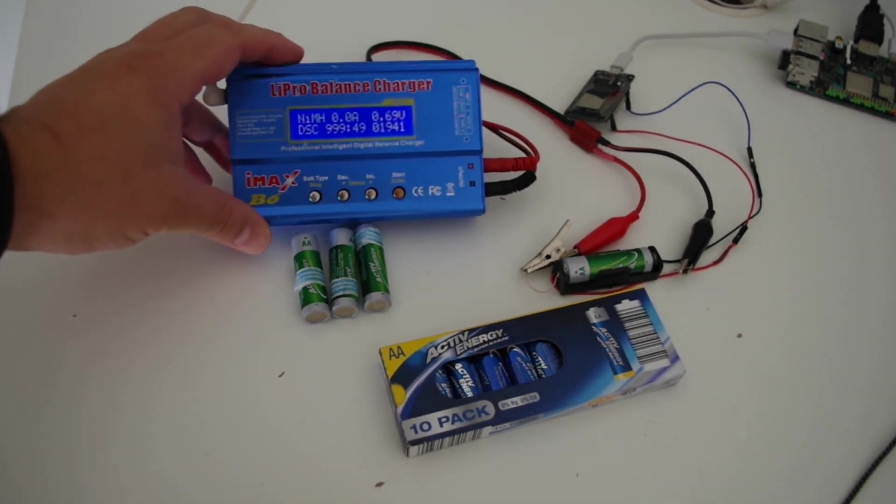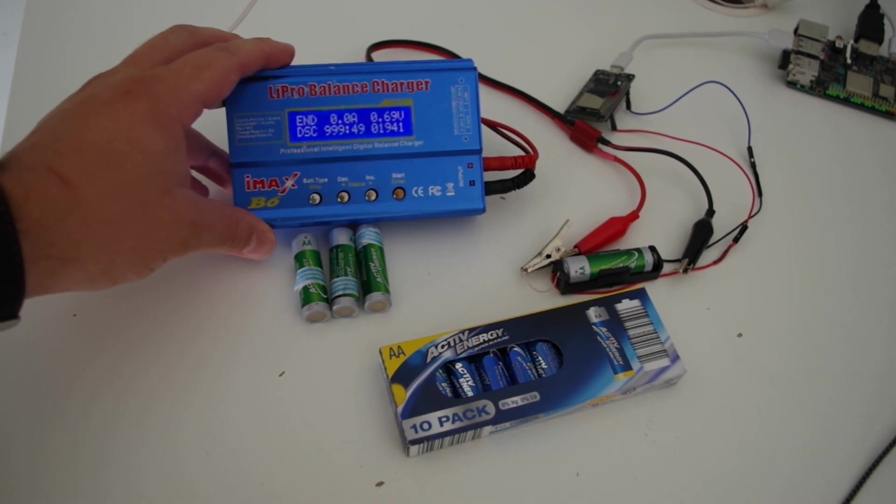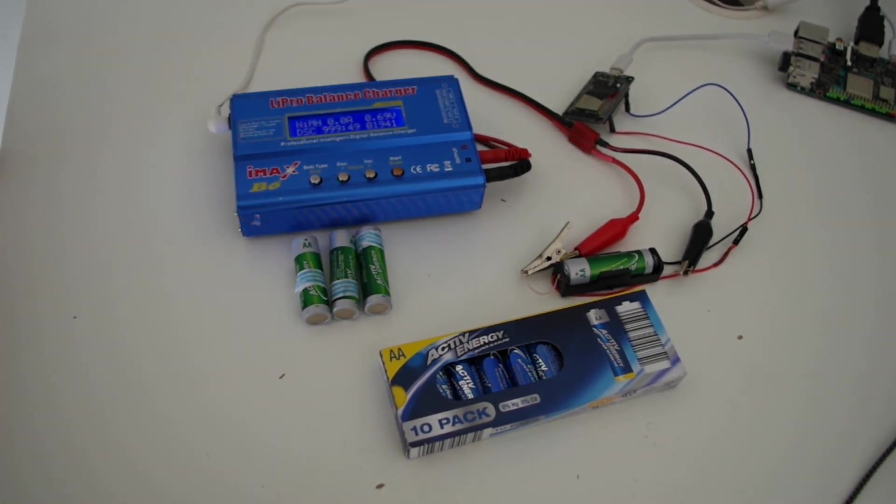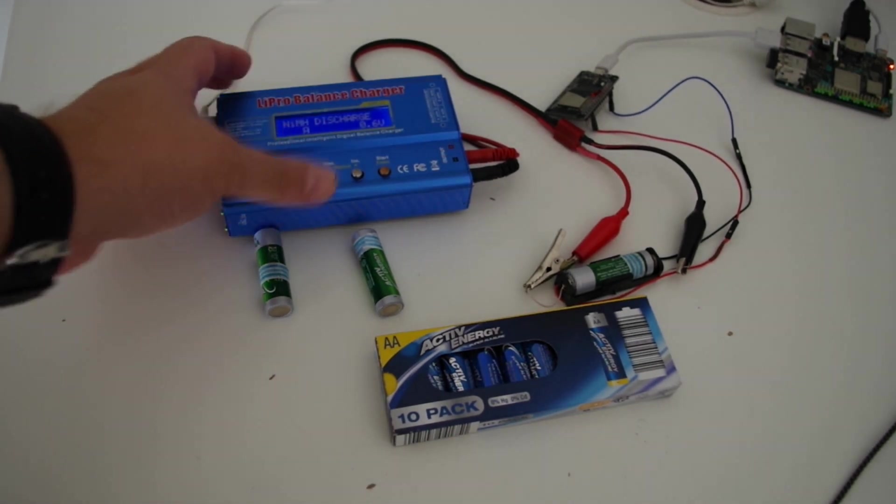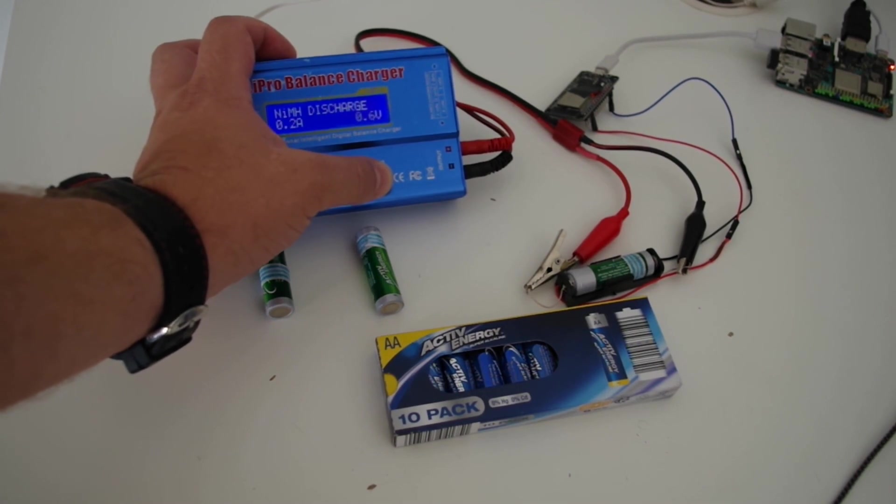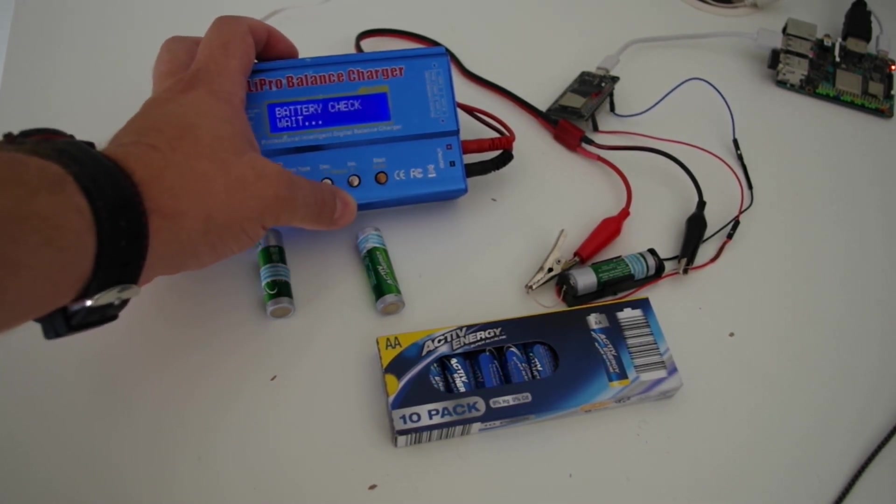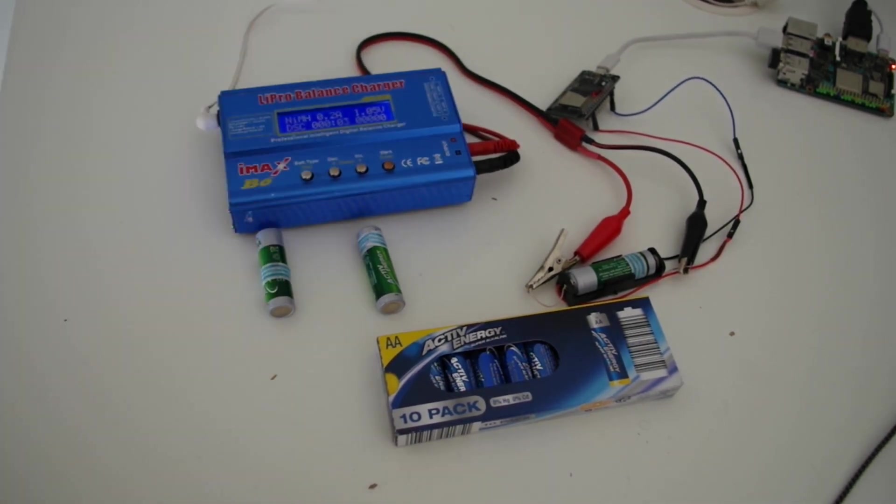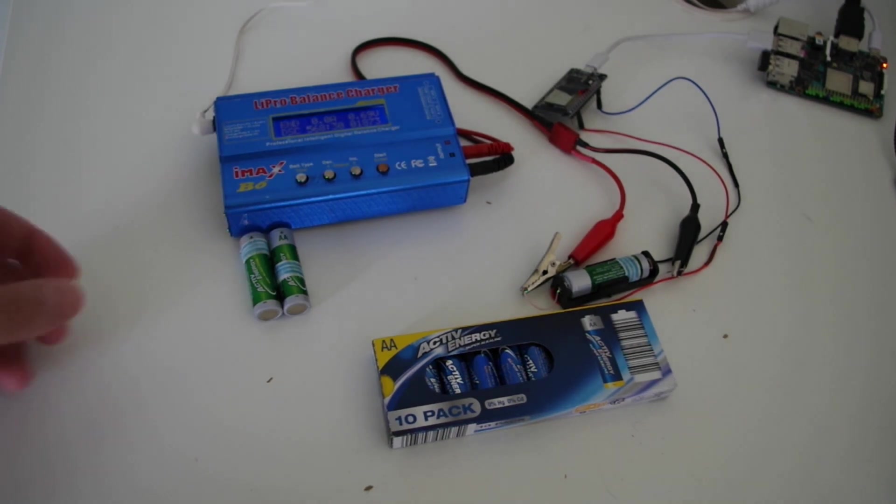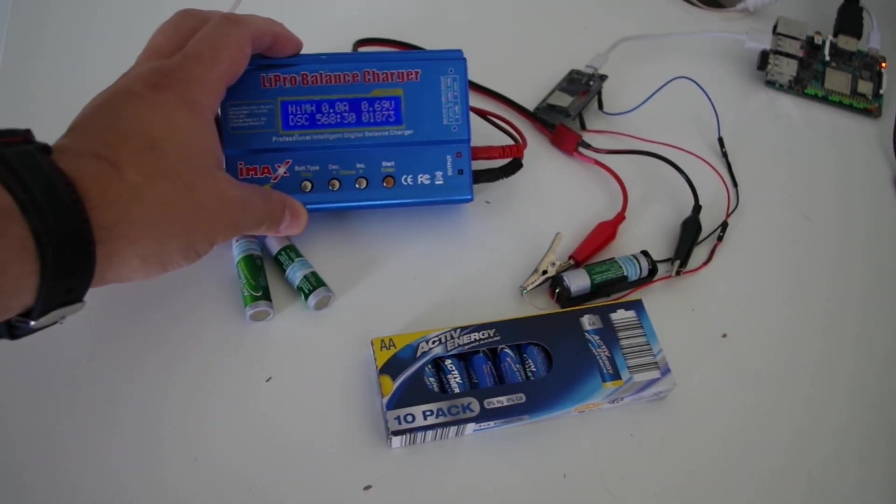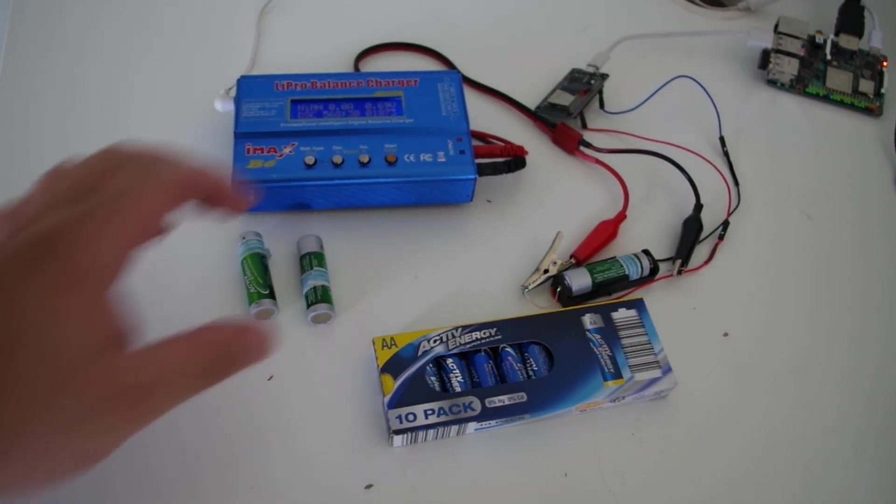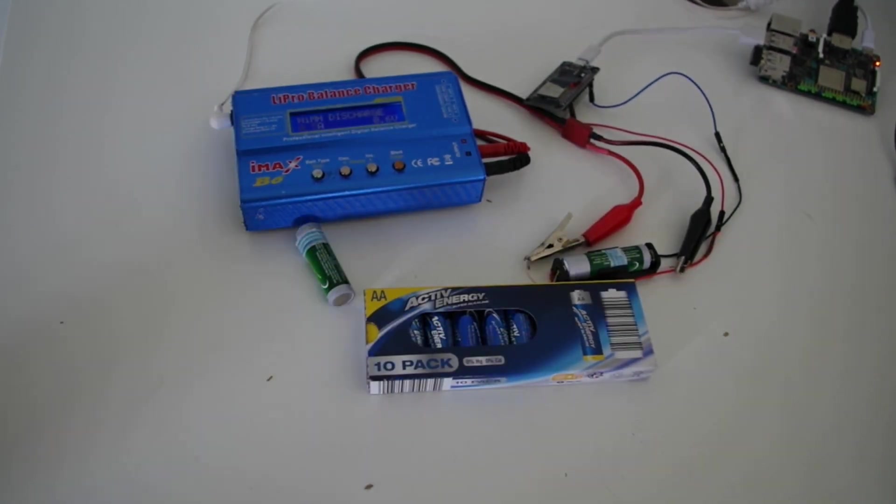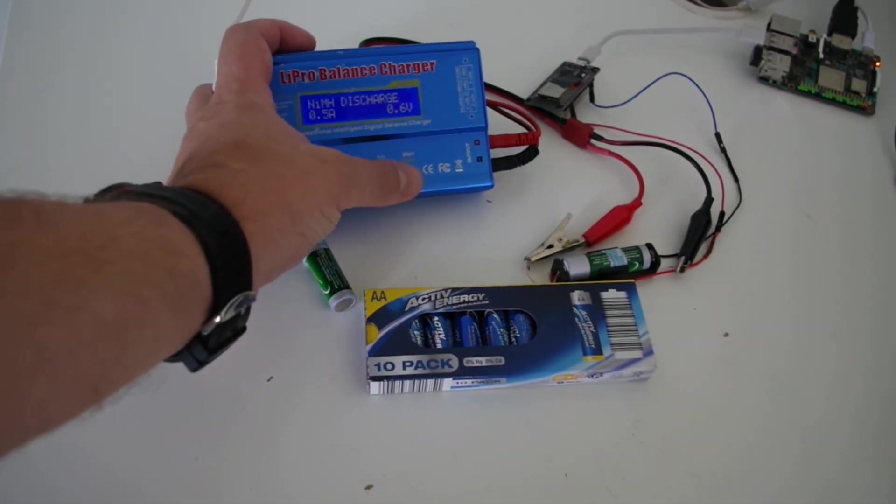Okay, first one discharge is finished and as you can see capacity is almost 2000 mAh. Not too much but so far so good. Let's check third one with 0.5 amp. Third cell, 0.5 amp current, let's go.